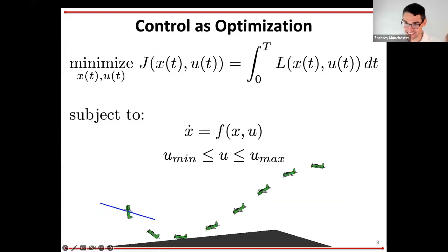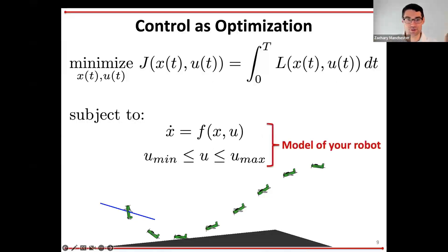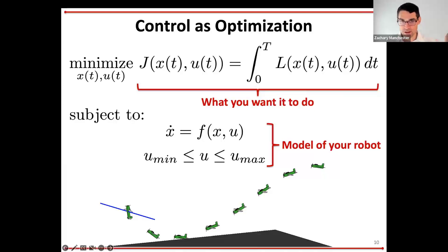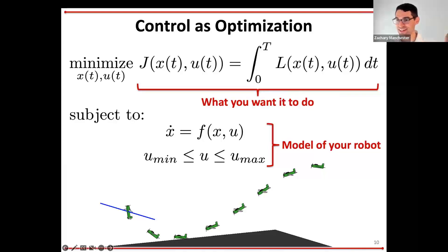Control as optimization should surprise no one in this audience. This is a pretty standard trajectory optimization problem: you have a model of your robot expressed as your F equals MA dynamics, actuator limits as inequality constraints, and an objective function or cost function that encodes behavior — get to some goal state, minimize energy, minimize fuel, minimize time. You write down what you want to do as a scalar cost function, the physics as model equations, and then get a computer to solve this. Control has a long history of being posed as optimization.